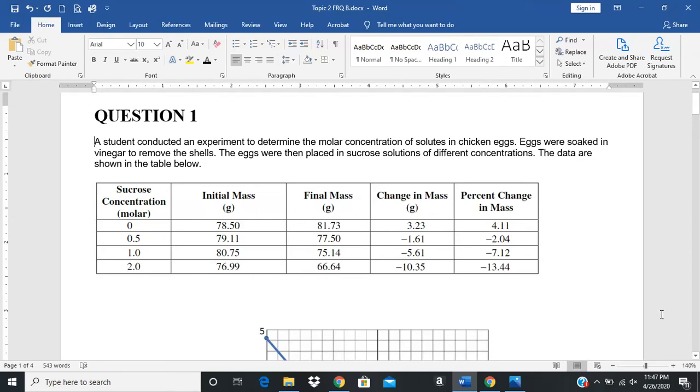We're going to take a look at the Topic 2 free response questions for Group B that you just finished up over the weekend. We'll start with Question 1, which is about a student who conducted an experiment looking at chicken eggs. This is very similar to what we did with the potato cores - it's actually the same type of lab, just using eggs instead of potatoes.